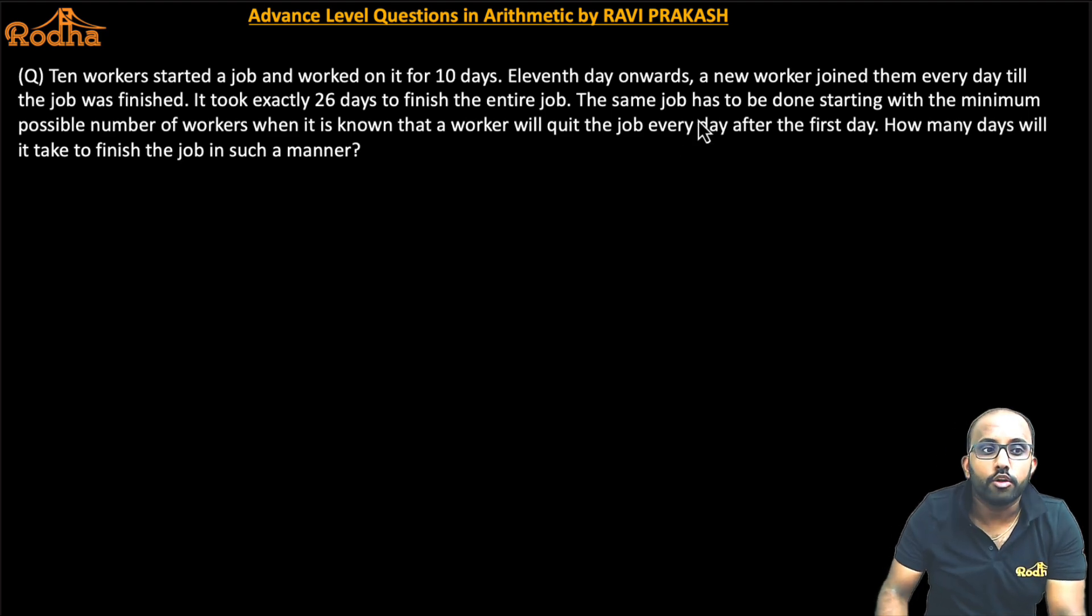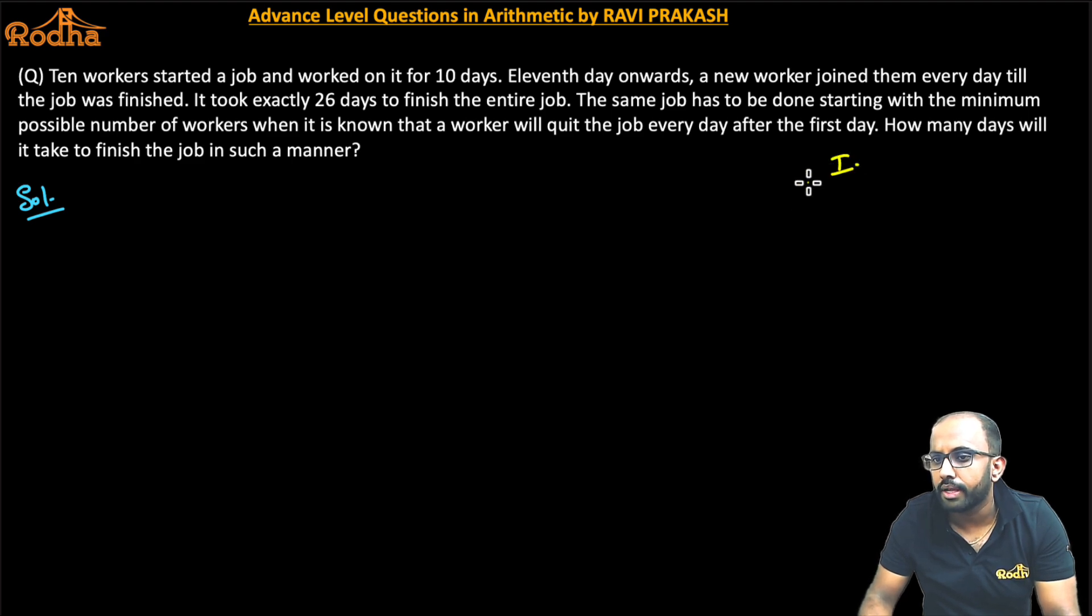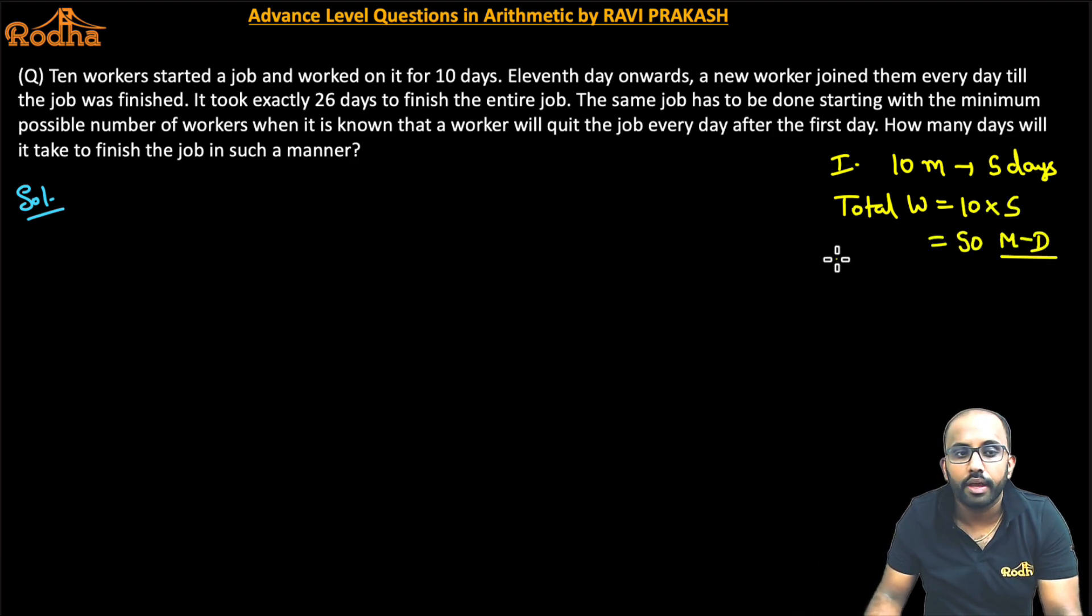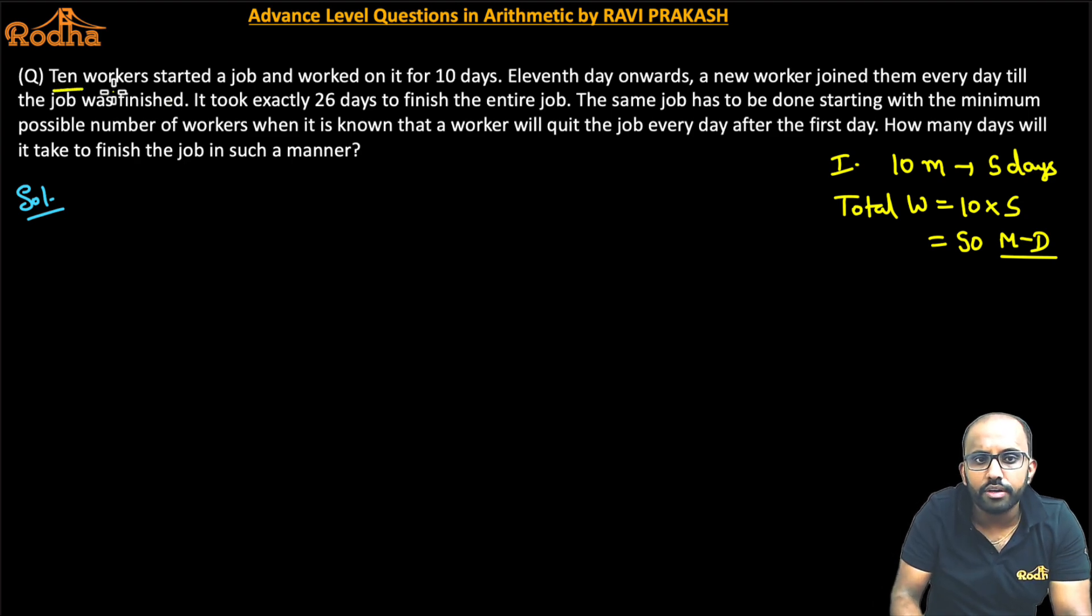Okay, so just try this question guys. Try it. If you don't know how to use funda, you know that basically funda is used. If 10 men can do a work in 5 days, so I assume the total work to be 10 into 5. We assume it to be as 50 man days, right? So what is this? That 10 workers started a job and worked on it for 10 days. So we can write here that the total work of the first 10 days of the job is 10 into 10. So in the first 10 days, there will be 100 man days of the job, right.